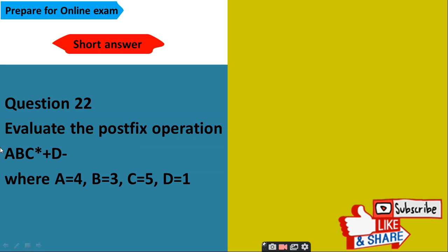Evaluate the postfix expression. The expression given is ABC star plus D minus and the values given are A equals to 4, B equals to 3, C equals to 5 and D equals to 1. You need to solve this expression and you will get the output at the end 18.